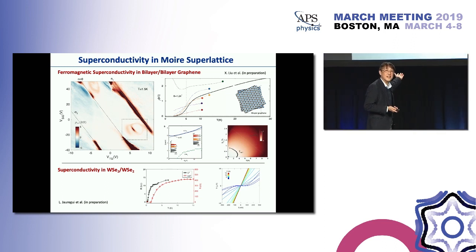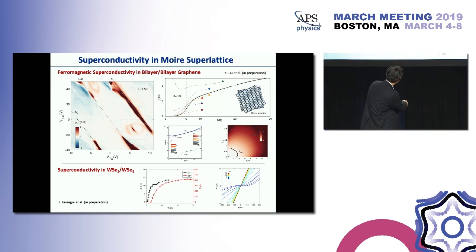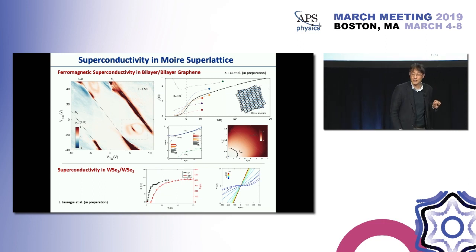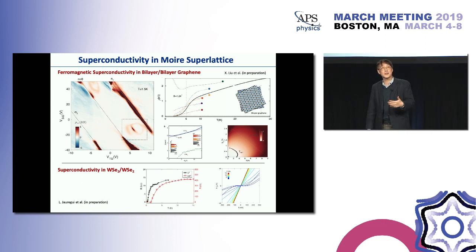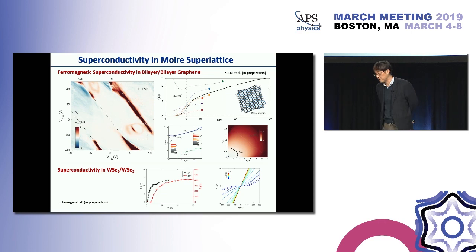It's not only graphene. Many groups are now reporting that whenever you put the right choice of different materials together with the right angle, correlated states appear. For example, tungsten diselenide on tungsten diselenide — two semiconductors put together — resistance drops close to zero, possibly indicating superconductivity. Such a simple additional degree of freedom, the twisting angle, can give you a very different type of system.